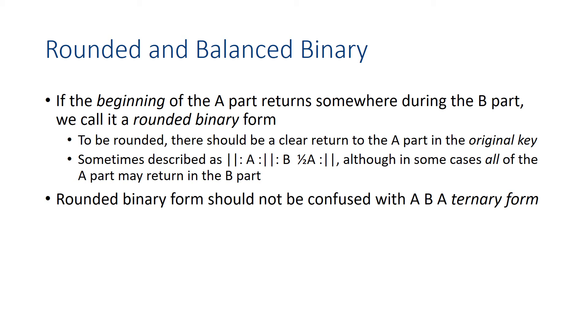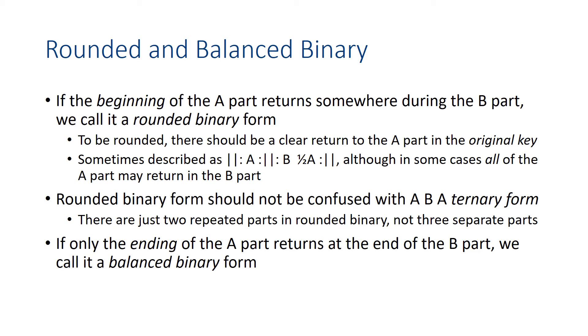But we shouldn't confuse rounded binary with ternary, which is A, B, A, because there are just two repeated parts. You can see here's the first part, and here's the second part. Not three separate parts. A just returns within the B. So that's rounded binary.